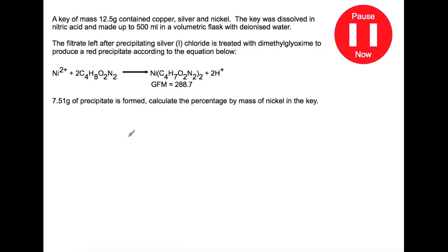Try this second part of the question now. Like before, we have the same key with a mass of 12.5 grams, made up to 500 mL in a volumetric flask after being dissolved in nitric acid. We're looking at the filtrate after precipitating the silver chloride — that was 100 mL of filtrate. It's treated with dimethylglyoxime to produce a red precipitate. We've been given the gram formula mass of the red precipitate, and the question tells us we have 7.51 grams of precipitate. We want to find the percentage by mass of nickel in the key.